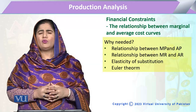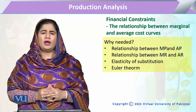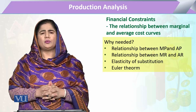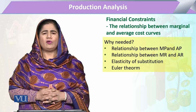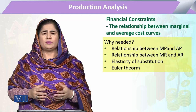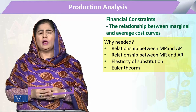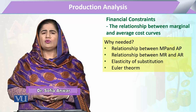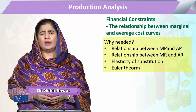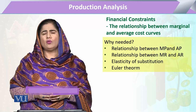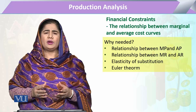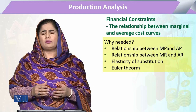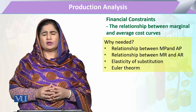First, coming to the point of why we require to have analysis of this type of relationship. As we know in the production function, we have already studied that there is a particular relationship between marginal product and the average product. When we have to assess the performance of any firm related to its production, we want to have a break-even point and check where is the marginal product and the average product of that firm.